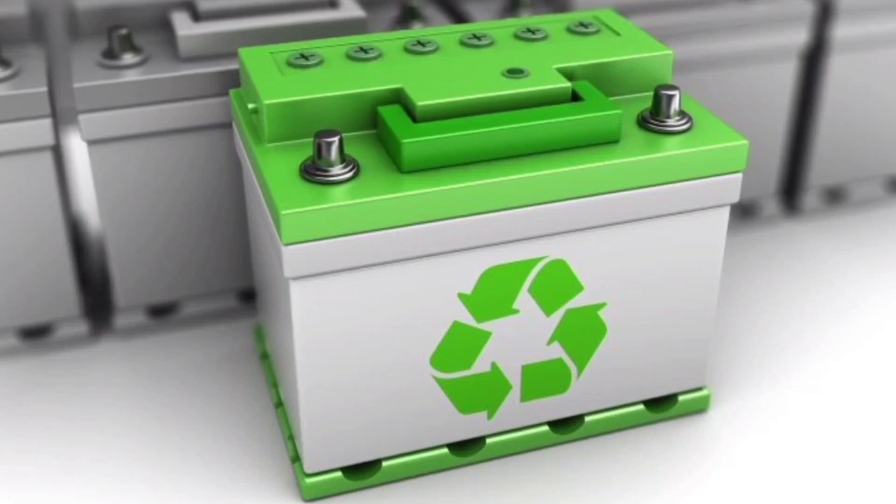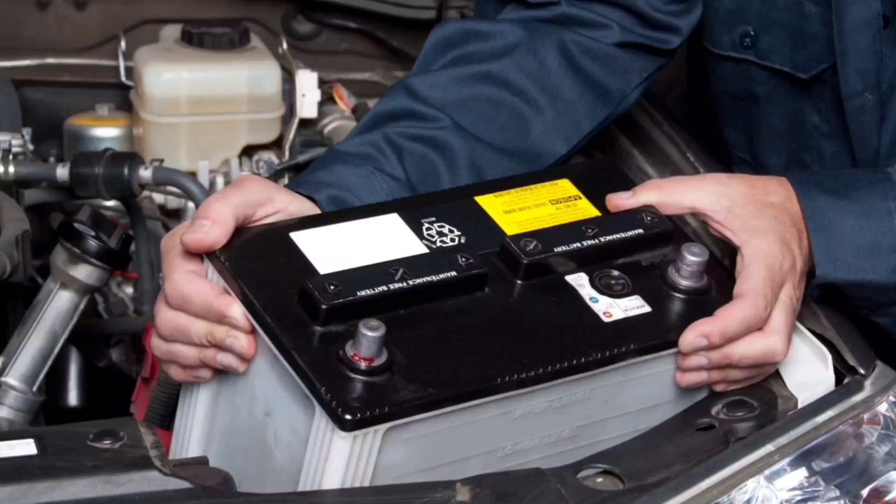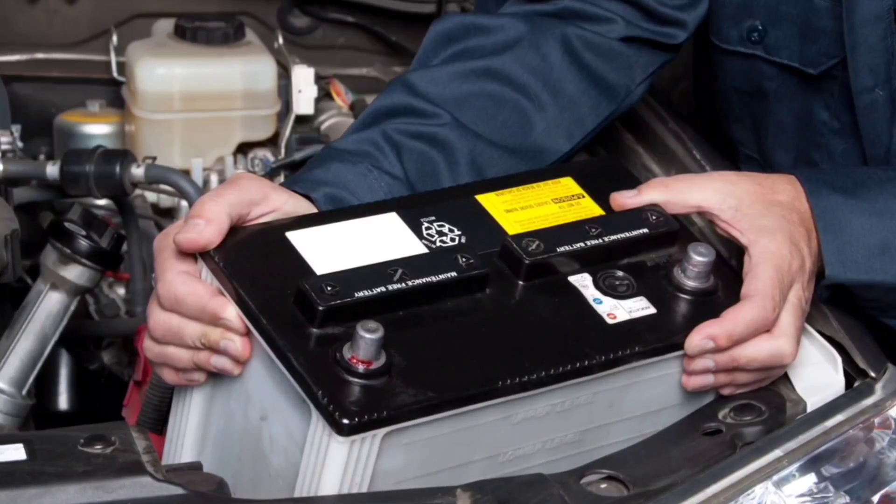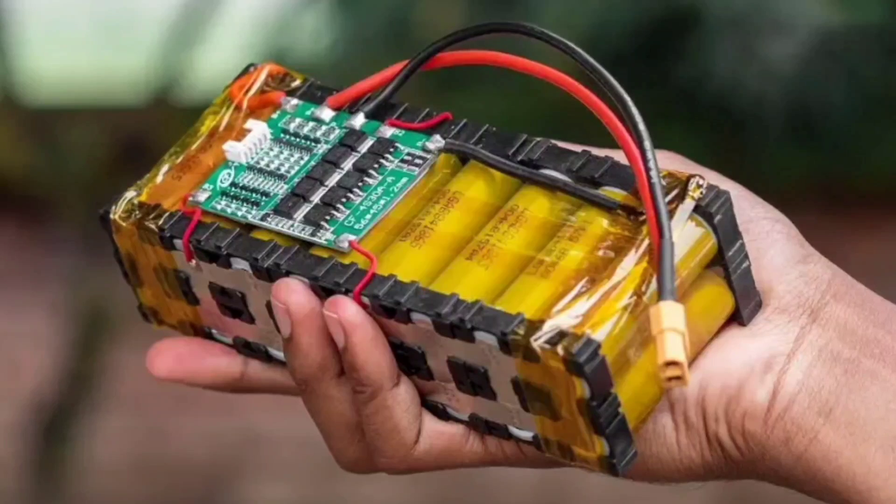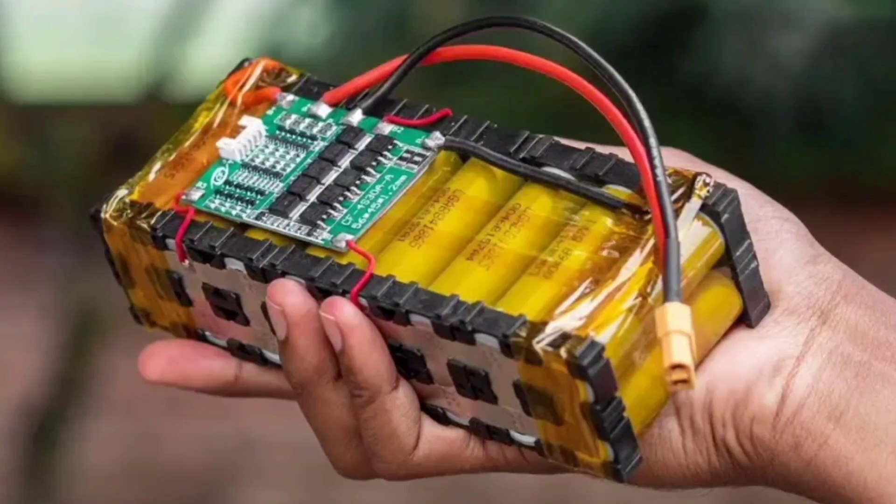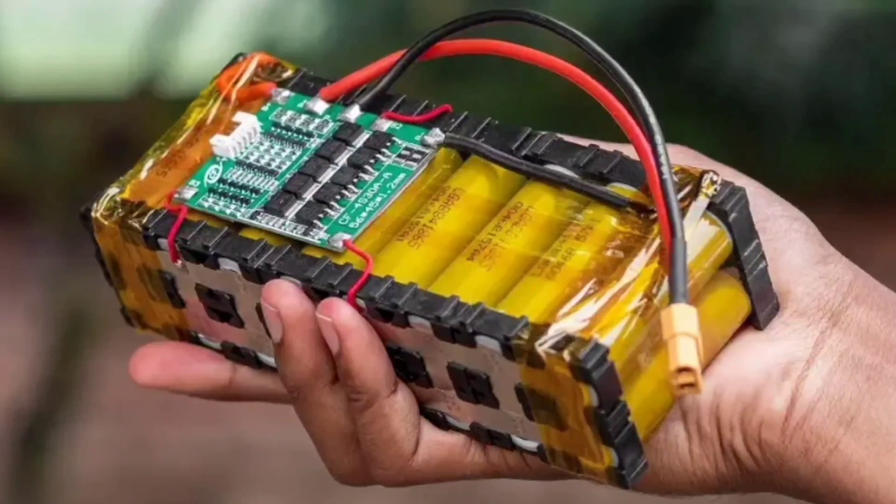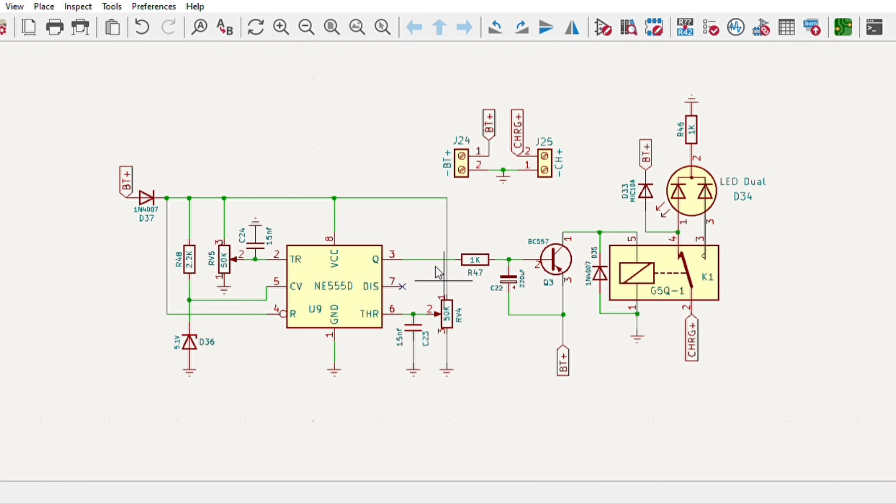Hi guys, today in this video I will be making an automatic cut-off trickle charger that can charge both lead acid or lithium batteries and maintains the set cut-off voltage. I designed a simple circuit diagram which is based on a 555 IC.